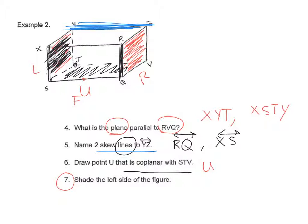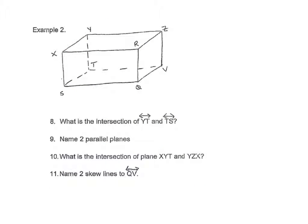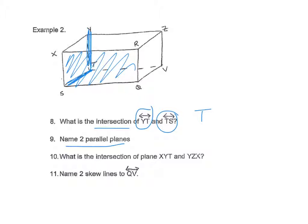The intersection of line YT and line TS: two lines intersect at a point, so the point where they intersect is point T. Name two parallel planes — two planes that never intersect. I'll choose the front and back. To name the front, take three points with no commas: XSQ is parallel to the back plane, which is YTZ.